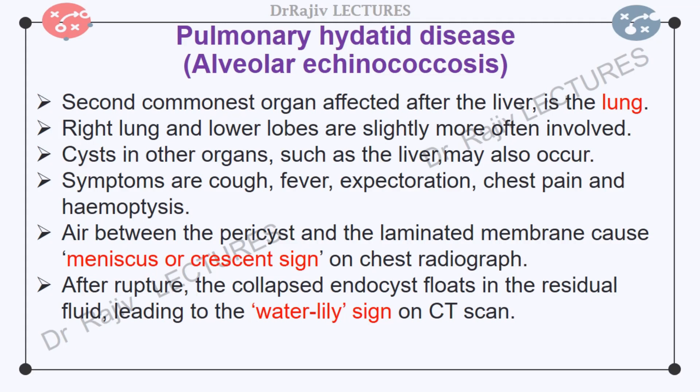The second commonest organ affected by hydatid disease after the liver is the lung. The right lung and lower lobes are slightly more often involved. The cyst is usually single, but multiple cysts and concomitant hydatid cysts in other organs such as the liver may also occur. The condition may be asymptomatic and found incidentally. Symptoms include cough, fever, expectoration, chest pain and sometimes hemoptysis. Air may be present between the pericyst and the laminated membrane due to erosion of the bronchioles, giving rise to a fine radiolucent crescent or meniscus sign on chest radiograph. When the cyst ruptures, the collapsed endocyst floats in the residual fluid, giving rise to the water lily sign on CT scan.